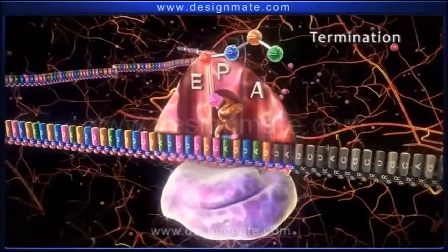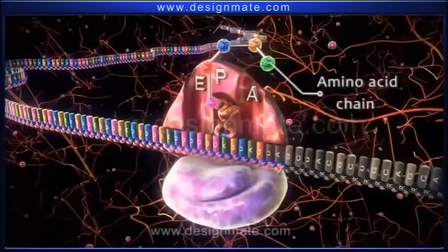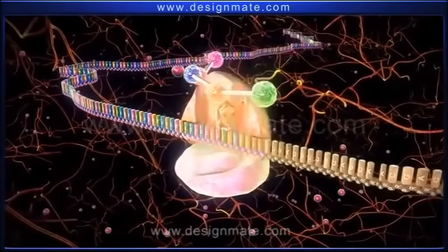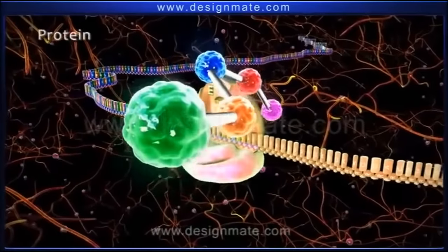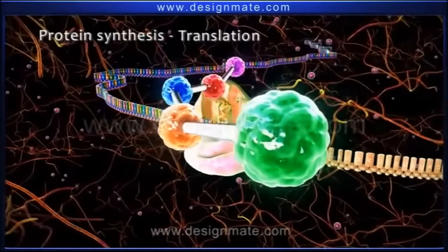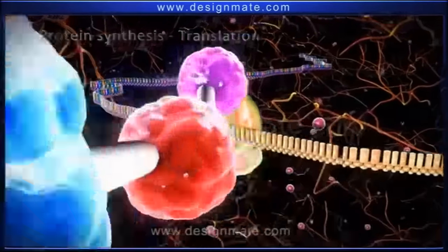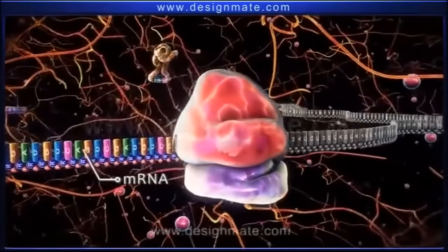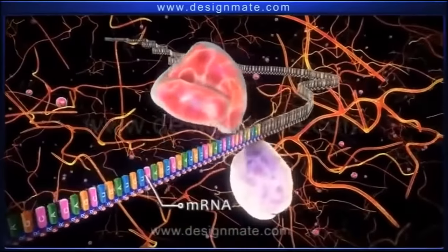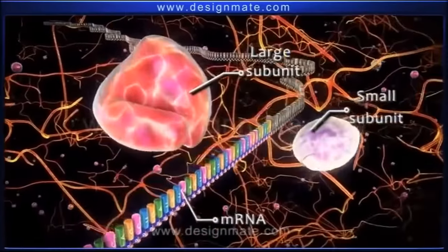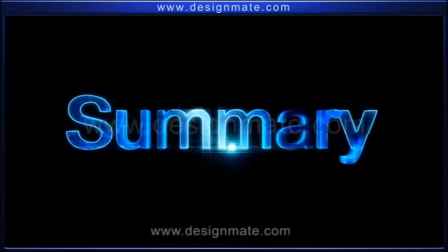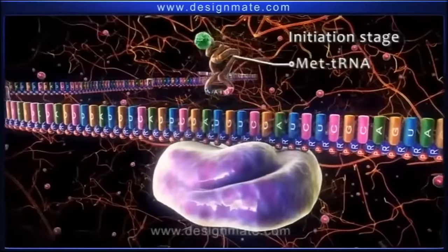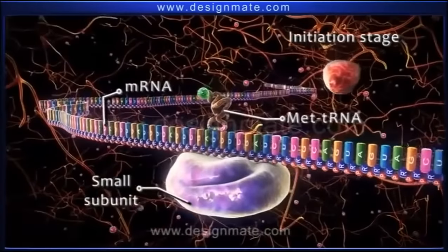Termination is the last stage of protein synthesis. The chain of amino acid molecules is released from the ribosome. This released amino acid chain is the protein, and this part of protein synthesis is known as translation. Then the tRNA detaches from the mRNA. Protein synthesis shows that the first stage involves the binding of met-tRNA to mRNA and the small subunit of the ribosome.